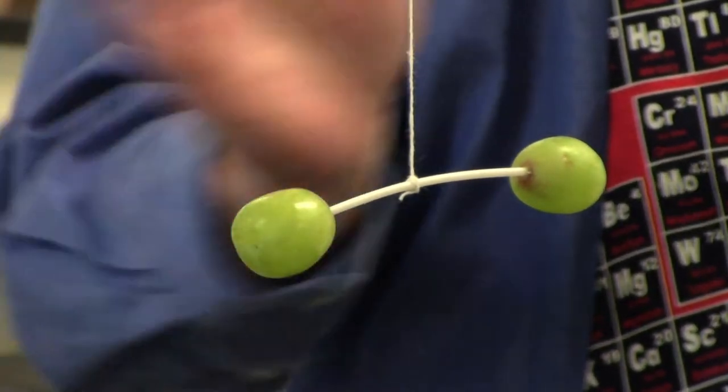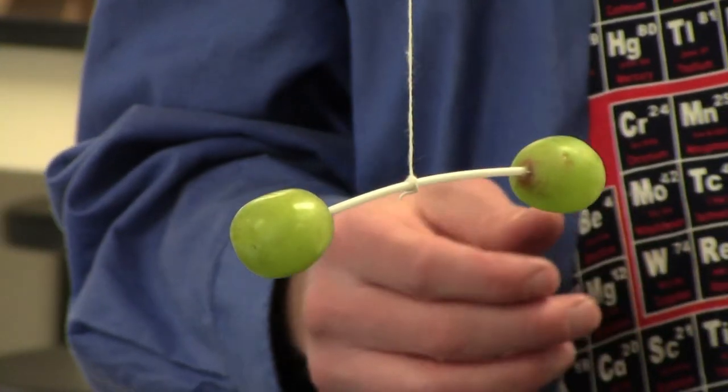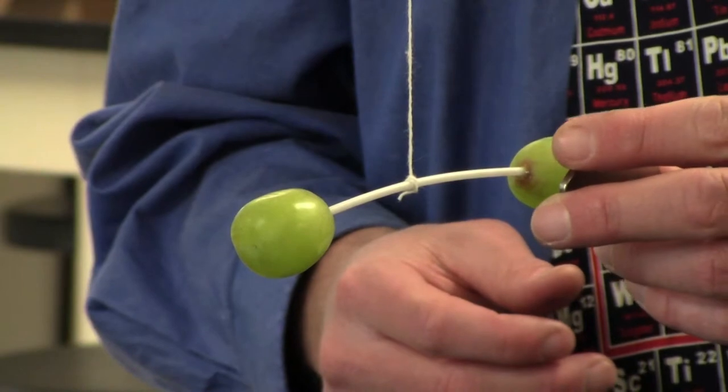And you can see the grapes are not swinging or moving on their own right now. And now let's show the magnetic field to the grapes.